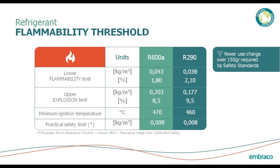These refrigerants' practical safety limit is about 8 grams per meter cubed. So if you have a 5 by 3 by 3 meter room — about 45 cubic meters — theoretically you're safe to charge that system up to 360 grams of refrigerant. But current IEC standards limit you to 150 grams without any special jurisdiction required. There are certain jurisdictions which will allow special permits to exceed these charges based on the type of occupants and volume of the room, but that requires special permitting. The point is that when you keep the charge limit down to 150 grams, you're looking at a fairly safe system.